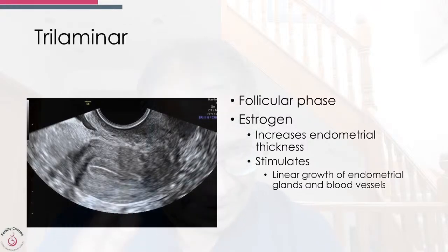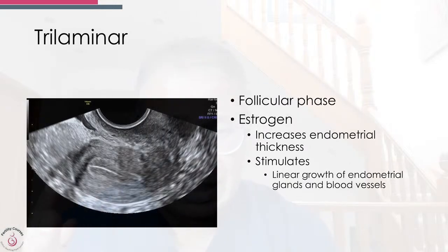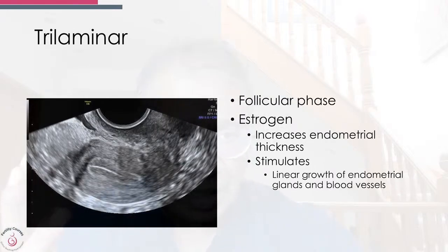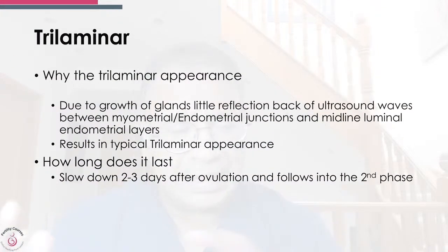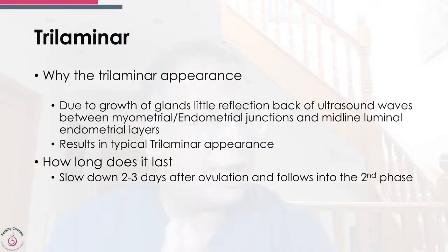Estrogen rises and increases endometrial thickness. It starts stimulating linear growth of endometrial glands and blood vessels. The trilaminar appearance seems to come from growth of glands, which create a small reflection of ultrasound waves between the myometrial and endometrial junctions, and a midline luminal endometrial layer.